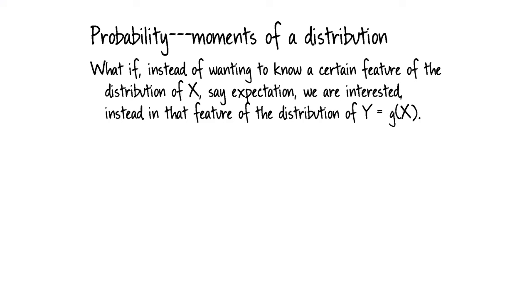What if instead of wanting to know a certain feature of a distribution of X, say the expectation of X, we're instead interested in the expectation of some function of X? We know the distribution of X, but we really care about Y, this other random variable Y which equals G of X. Maybe we don't care about the entire distribution of Y — we just care about some feature of it like the expectation. How can we find the expectation of Y?